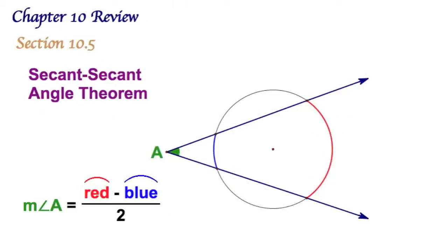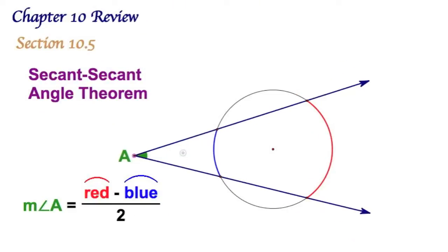Now let's suppose I have a pair of secants that meet outside the circle here at A. Well, they're going to intercept the circle in the blue arc and the red arc. And quite interesting, the measure of this angle here, angle at A, the green angle, is red minus blue divided by 2. So that would be the secant-secant angle theorem.